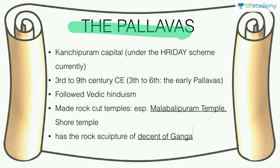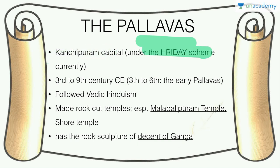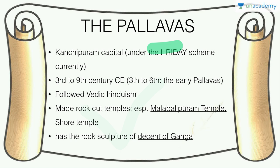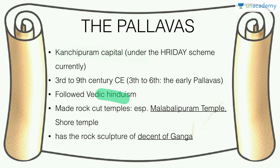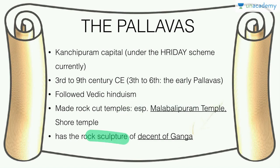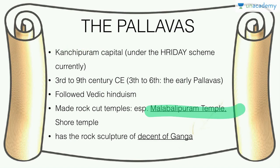The Pallavas had their capital at Kanchipuram — currently a city under the HRIDAY scheme. They followed Vedic Hinduism and made the rock-cut temples of Mahabalipuram, which includes the famous and beautiful rock sculpture of the Descent of the Ganga. Take note of these art and culture sites. Then the Chalukyas ruled between the Vindhyan mountains and the Krishna river — basically Maharashtra and Andhra Pradesh — established by King Pulakesi I in the 6th century CE at Vatapi (Badami). Pulakesi II is best known, having greatly expanded the empire. We know about him through a famous inscription at Aihole, and the Chinese traveler Xuanzang wrote about the Chalukyas.